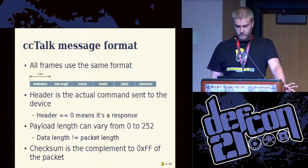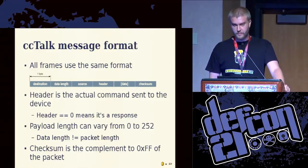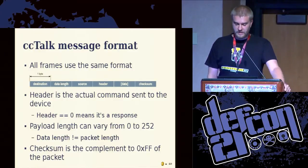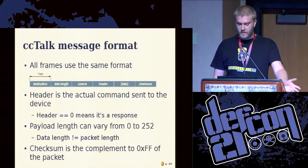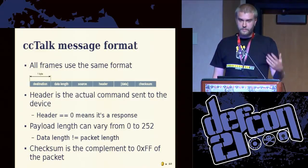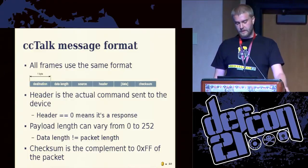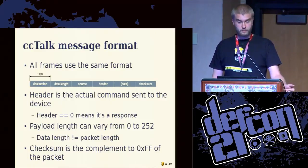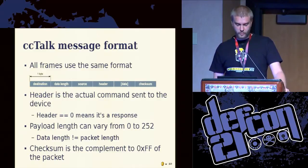A CCTalk frame looks like this: you have one byte for the destination address, one byte for the data length, one byte for the source, one byte for the header — I'll talk about this later — and several bytes of data, depending on what command you will send to the device. If the header is equal to zero, it means it's a response. So you don't actually know what a response is to — you need to know what you asked to get the correct answer.